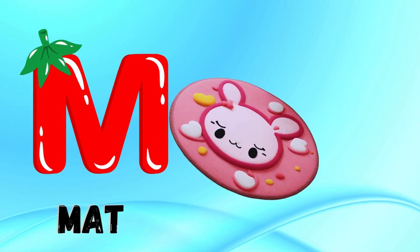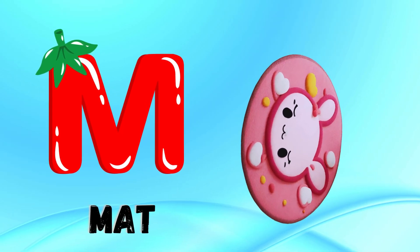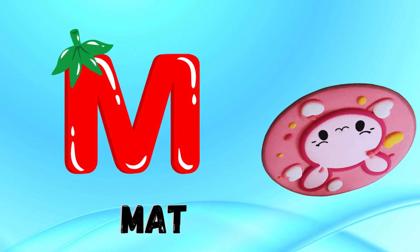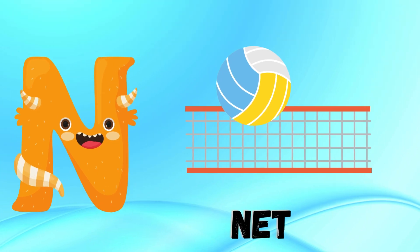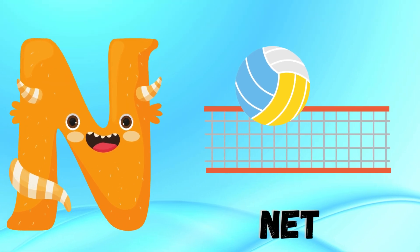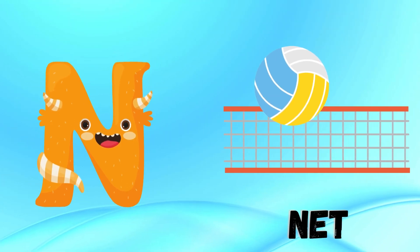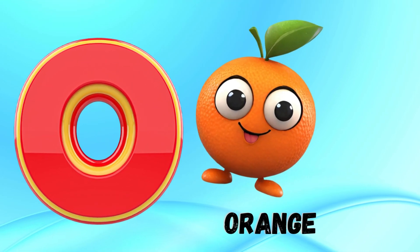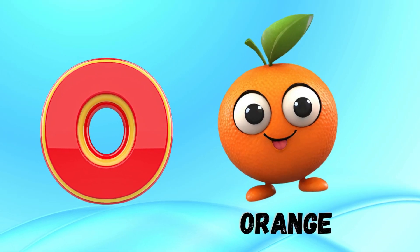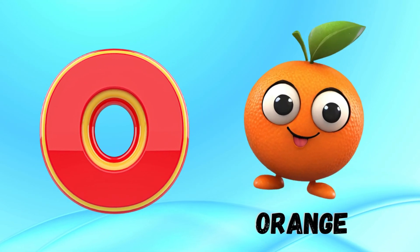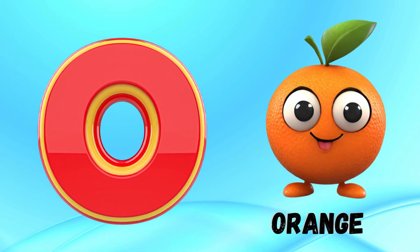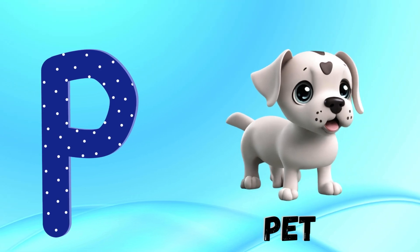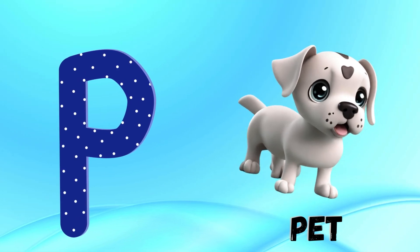M is for mat, m-m-mat. N is for net, n-n-net. O is for orange, o-o-orange. P is for pet, p-p-pet.